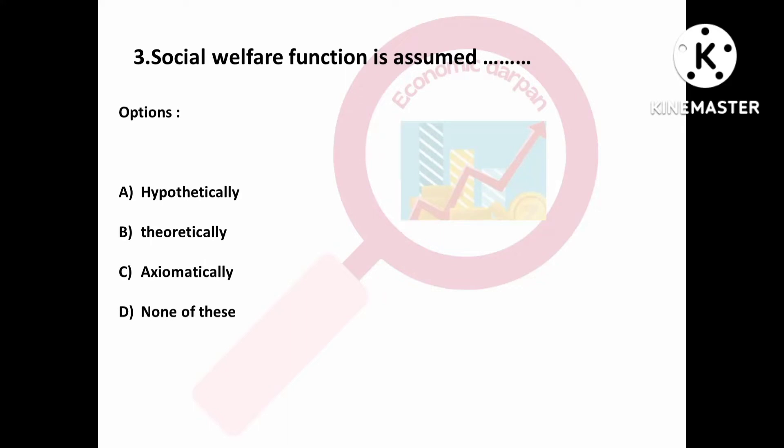Question number three is: social welfare function is assumed — Option A: hypothetically; Option B: theoretically; Option C: axiomatically; Option D: none of these. Option C is right. Social welfare function is assumed axiomatically.